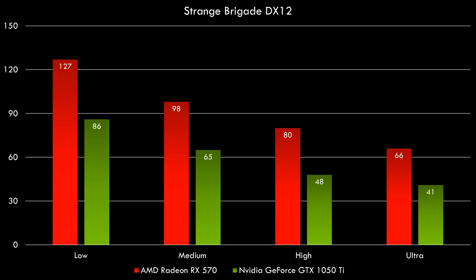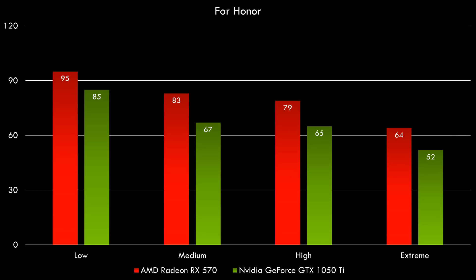Let's have a look at some benchmarks. We're going to start with some modern games and then work backwards to older titles. Here we have Strange Brigade, which came out this year. Testing both APIs — in DirectX 12 we can see exactly what we expected: the RX 570 is ahead. Moving on to the Vulkan API, the Radeon gained a little bit of speed while the GeForce clocked in with the exact same benchmark results. The next game is the slightly older title For Honor, and once again we can see the RX 570 in front, but not by as much. At low details there's a difference of about 10 FPS which widens a little as we crank up the details.